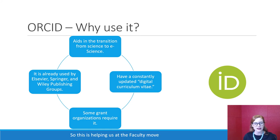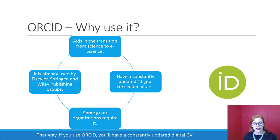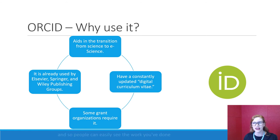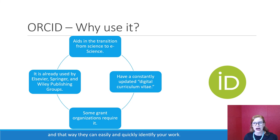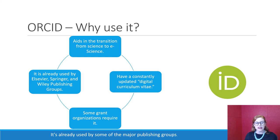Why should we use ORCID? It aids in the transition from science to e-science, helping us at the faculty move forward into the 21st century. If you use ORCID, you'll have a constantly updated digital CV so people can easily see the work you've done. When you are applying for grants, some organizations require that you have an ORCID so they can easily and quickly identify your work.